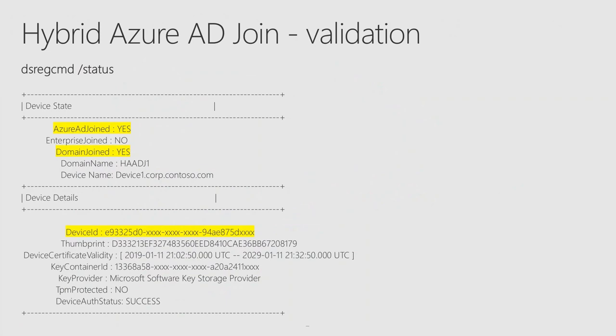Absolutely. Just like in the previous video on the federated registration flow, to validate whether or not the process of Hybrid Azure AD join succeeded, you can go into the workstation and launch the displayed command line: dsregcmd /status. The highlighted portions indicate that the device is both Azure AD joined and domain joined, indicating that it is now Hybrid Azure AD joined. You can use the device ID or the device display name mentioned here to search for this device in the Azure AD portal.